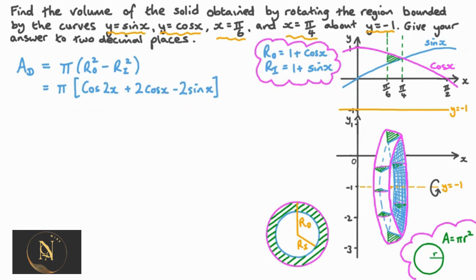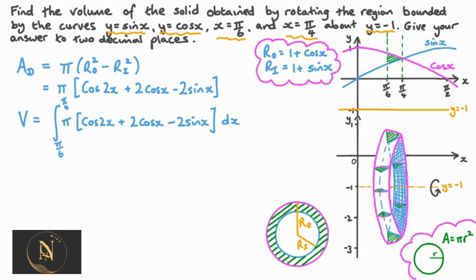Recalling the trigonometric identity that cosine squared x minus sine squared x equals cosine 2x, the area of a cross sectional disk becomes pi multiplied by cosine 2x plus 2 cos x minus 2 sine x. To find the volume of our solid, we integrate the area of these disks with respect to x between our boundaries x equals pi by 6 and x equals pi by 4, effectively summing the areas of infinitely many cross sectional disks bounded by cos x and sine x.